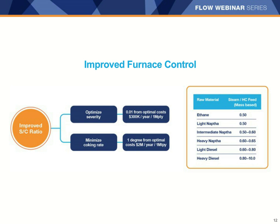Similarly, if you want to reduce the coking rate, the coil outlet temperature has to be carefully controlled. A deviation of just one degree away from the optimal temperature can cost up to $2 million per year per million ton per year capacity. Accurate measurement of the hydrocarbon feed is required to make sure you have the appropriate steam to hydrocarbon ratio and to maintain tight control of the ratio to improve the throughput and yield of the furnace.